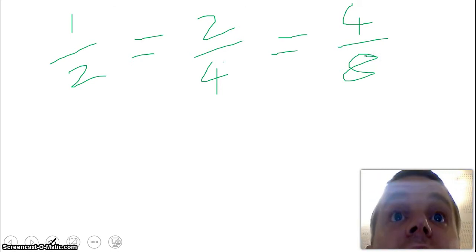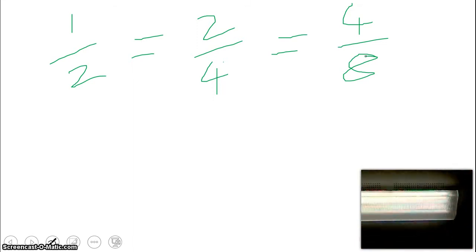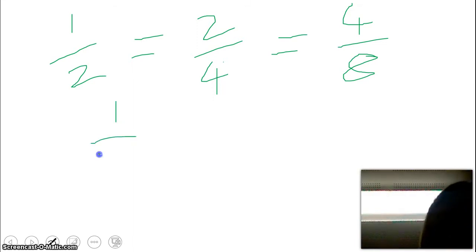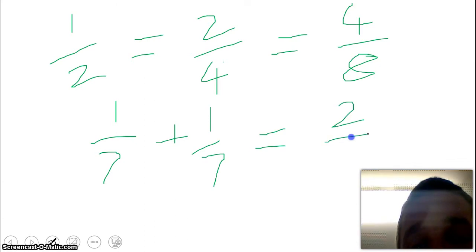What we're going to do today is talk about adding and subtracting. So we'll start off with adding and subtracting. If I've got something like 1 over 7 plus 1 over 7, I can add those together and get 2 out of 7.